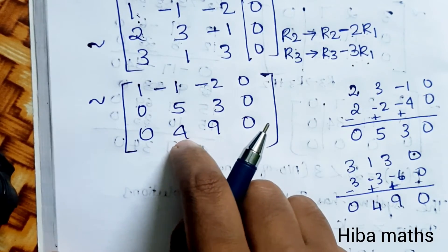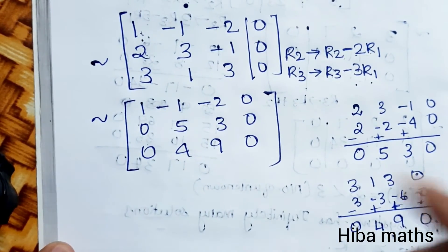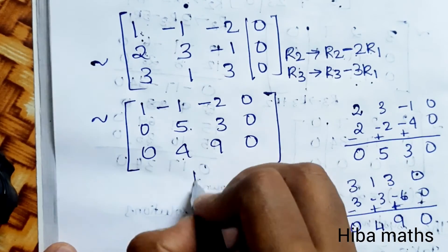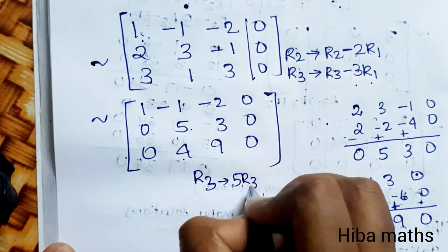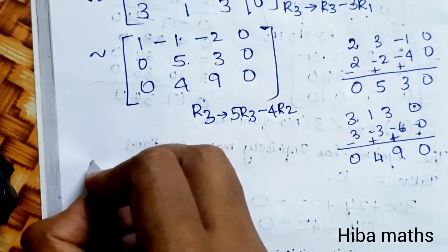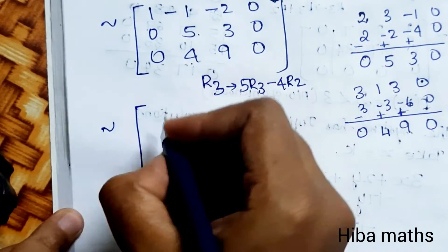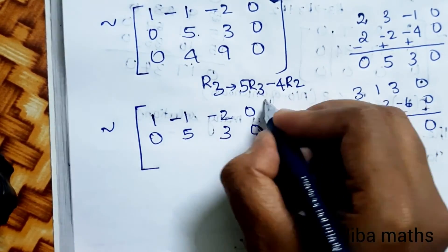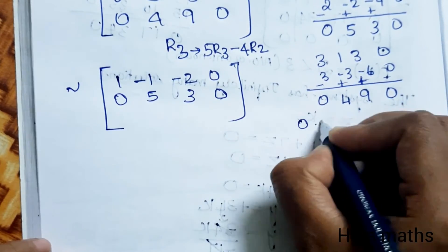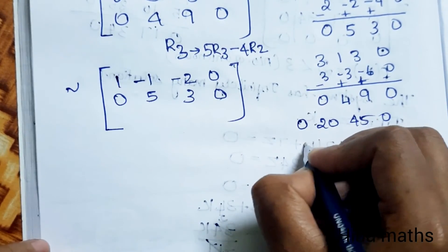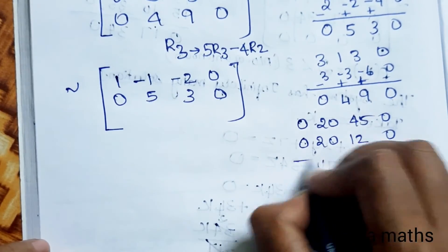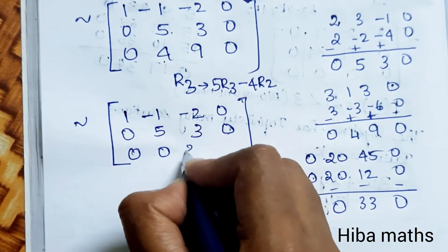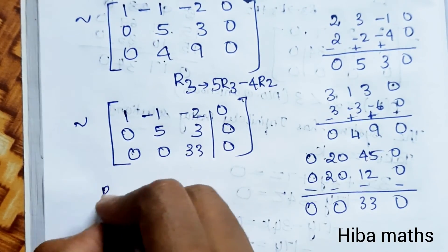Comparing rows 2 and 3: coefficients are 5 and 4, so R3 changes to 5 times R3 minus 4 times R2. Computing: 5×R3 gives 0, 20, 45, 0; 4×R2 gives 0, 20, 12, 0. Subtracting: R3 becomes 0, 0, 33, 0. Final matrix: row 1: 1, -1, -2, 0; row 2: 0, 5, 3, 0; row 3: 0, 0, 33, 0. The rank of A is 3, which equals the number of unknowns.